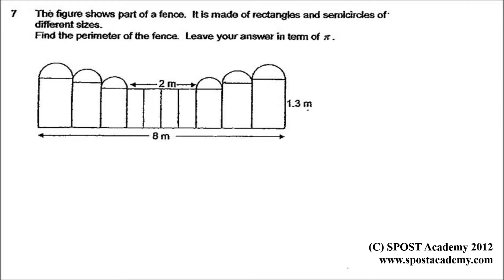This fence is made of rectangles and semicircles of different sizes. The difficulty comes in because the circumference of the circles are all different due to the different diameters. But we can see that this semicircle matches with this semicircle to form one circle. This semicircle would match with this semicircle to form one circle. While this semicircle would partner with this semicircle to form one full circle.